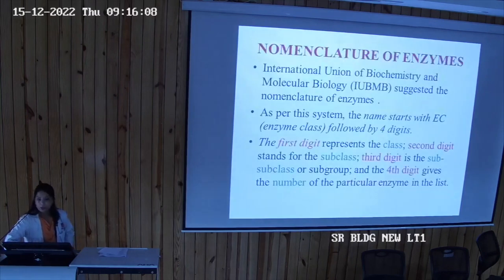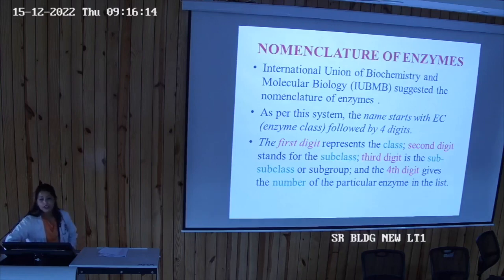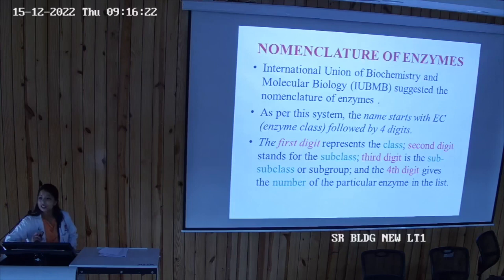Regarding nomenclature, the International Union of Biochemistry and Molecular Biology suggested a four-digit classification system for enzymes. The first digit is for class, the second for subclass, the third for sub-subclass, and the fourth is the serial number.